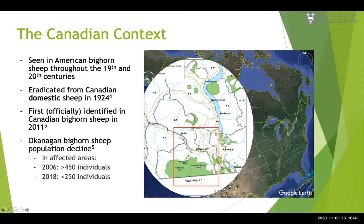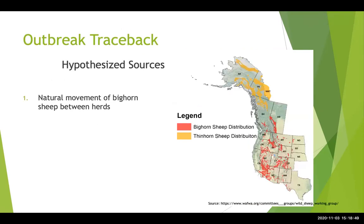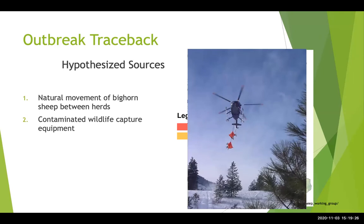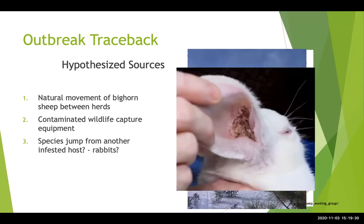There were a few hypothesized potential sources of the outbreak in the Okanagan population. One was natural movement of bighorn sheep between herds — the next closest bighorn sheep herds in the US are about 250 kilometers away with large waterways between them, so it seemed improbable but not impossible. Another potential option was contaminated wildlife capture equipment. A third hypothesis was that another host species, such as rabbits, could have had Sarcoptes and transmitted the parasite over to our wild bighorn sheep.